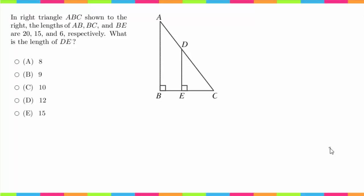in right triangle ABC shown to the right, the lengths of AB, BC, and BE are 20, 15, and 6 respectively. What is the length of DE?